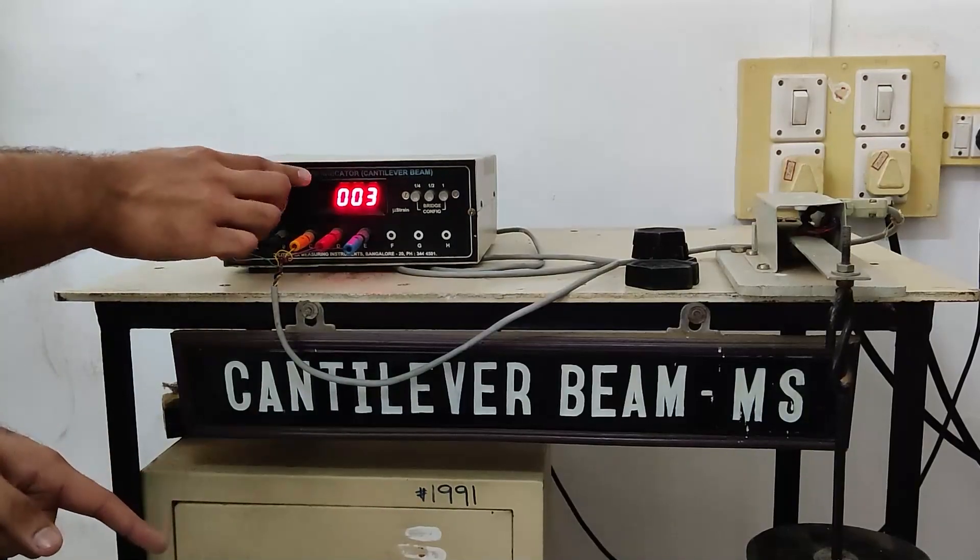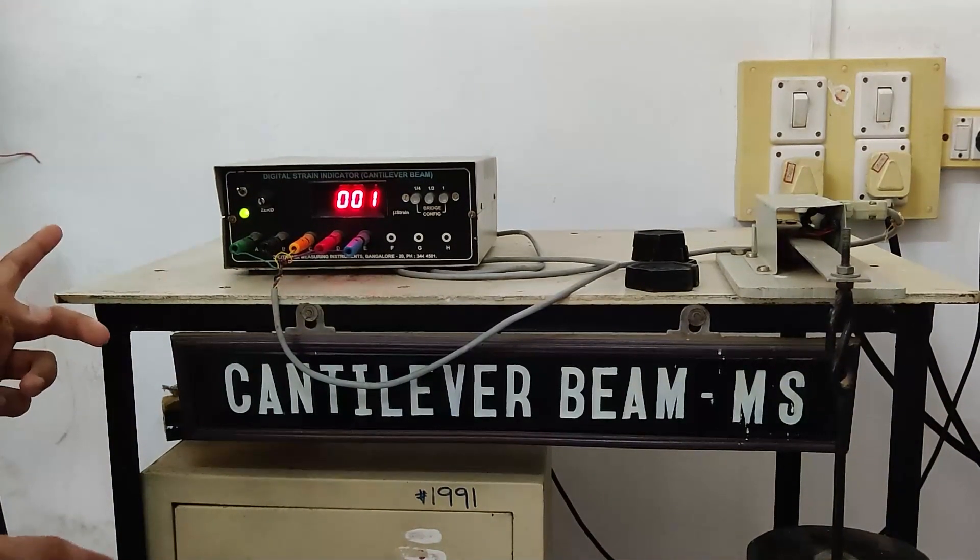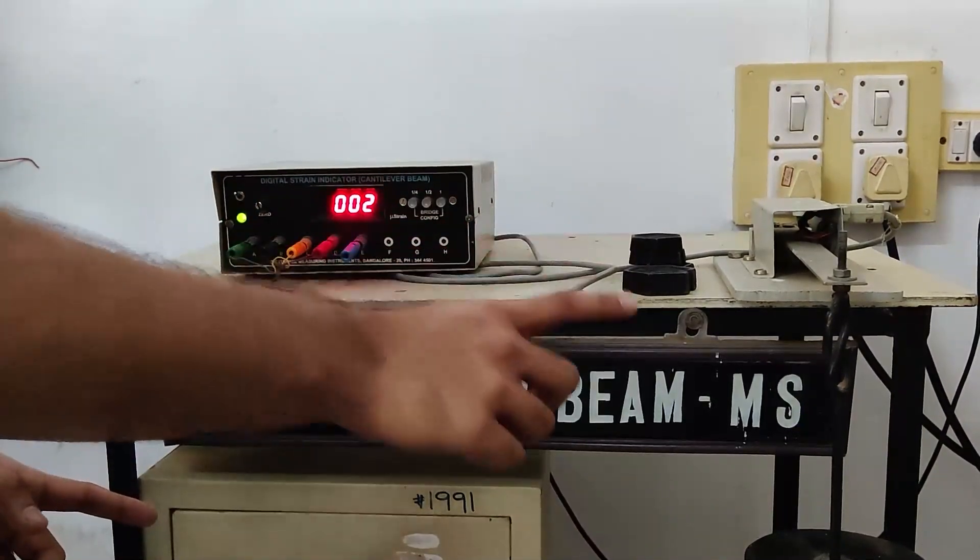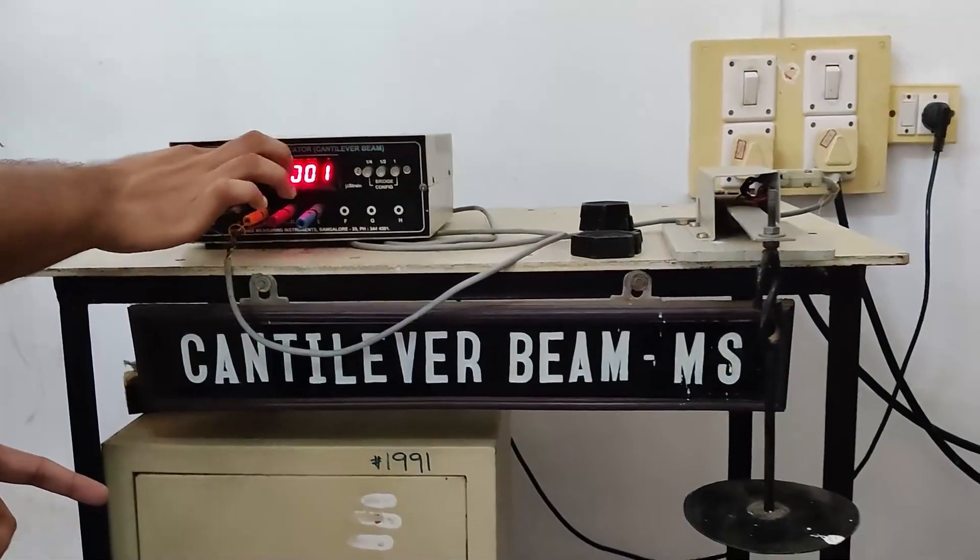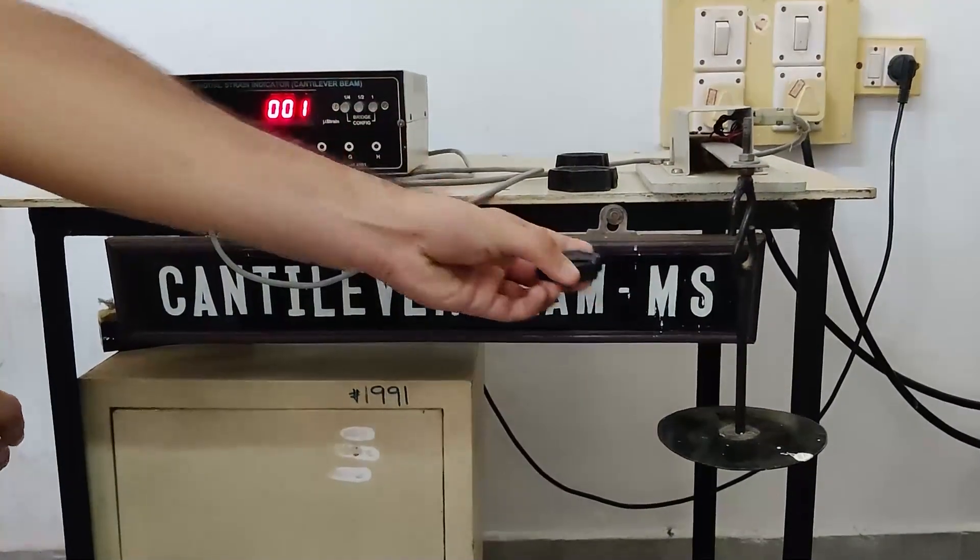The value is still fluctuating because of the stabilizer over there. Now we're going to jump into the experiment. For this experiment we keep the weights one by one on the bar over there which then indicates the strain which is caused on the mild steel. Now let's keep a 100 gram weight on this plate over here.